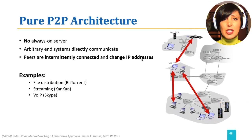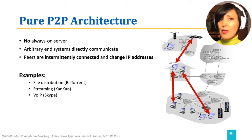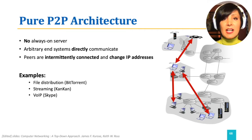Remember that in client-server architecture, we had an always-on server with a known IP address. That known IP address was used by clients to contact the server. In peer-to-peer architecture, there are no always-on servers, and two end systems can communicate with each other directly. The end systems, called peers, are intermittently connected and change IP addresses.